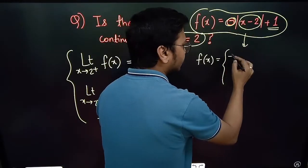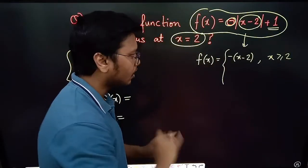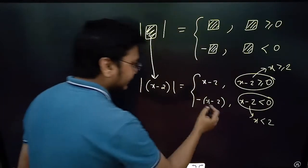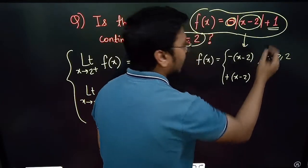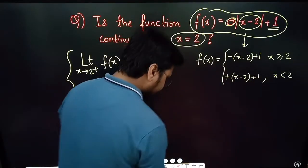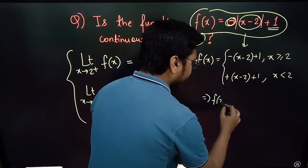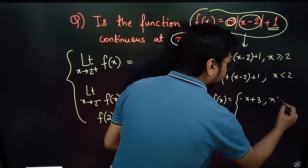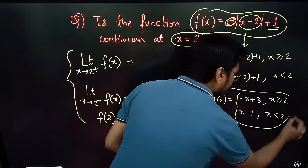Now I write f(x) as a piecewise function. Since f(x) = −|x − 2| + 1: when x ≥ 2, it becomes −(x − 2) + 1 = −x + 3; and when x < 2, it becomes −(−(x − 2)) + 1 = (x − 2) + 1 = x − 1. So f(x) = −x + 3 when x ≥ 2, and f(x) = x − 1 when x < 2.